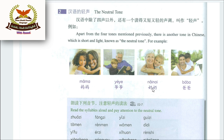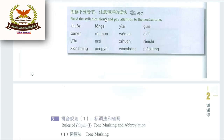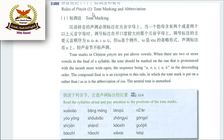Māma means mother; Yéye means grandfather — Dada abbu; Nǎinai means grandmother — Dadi; Bàba means father — Abbu. Practice the neutral tone words: Chāozi, Pángzi, Yǐzi, Guìzi, Hǎomā, Rénmen, Wǒmen, Dìdi, Yīfu, Érzi, Xǐhuan, Ránshū, Shānshàng, Péngyou, Wǎnshàng, Piàoliang.